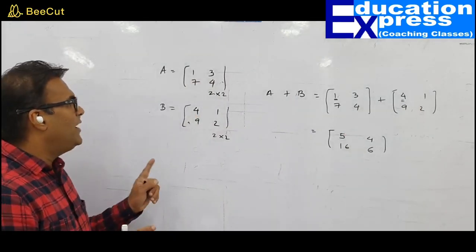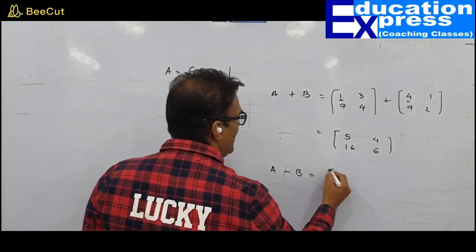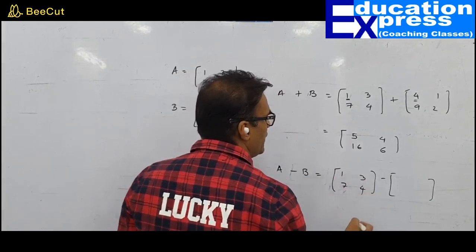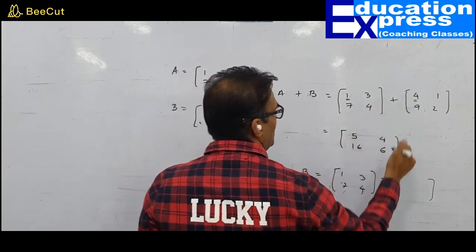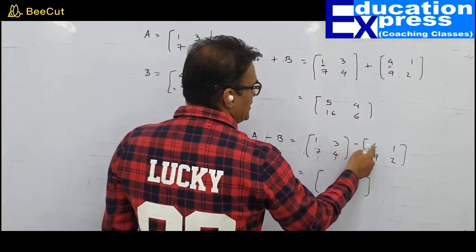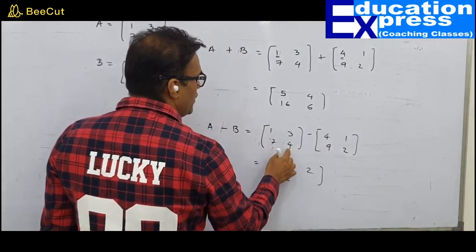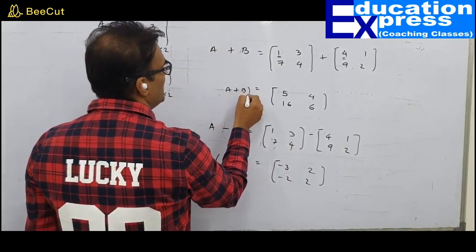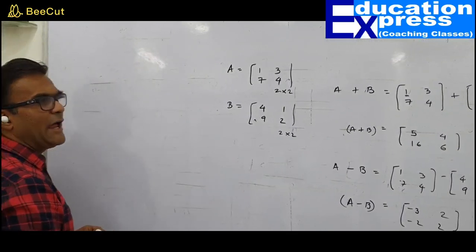Two matrices can also be subtracted, provided they are of the same order. Matrix A [1, 3, 7, 4] minus matrix B [4, 1, 9, 2]: corresponding positions are subtracted — 1−4=−3, 3−1=2, 7−9=−2, 4−2=2. This is the value of matrix A minus B. Now let me introduce the different types of matrix.